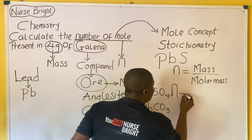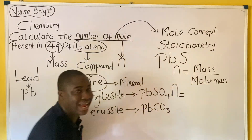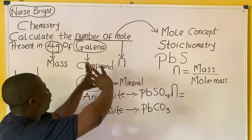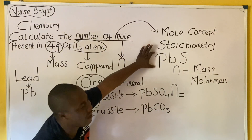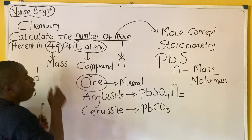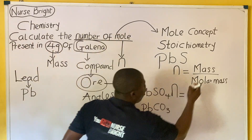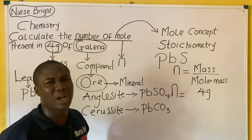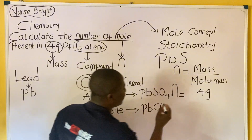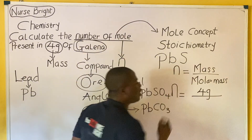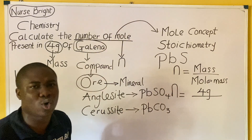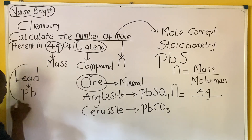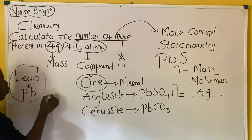In this question, we're looking for the number of moles, which is N. We are given the mass of the compound galena, which is 4 grams. So for mass, I'm going to write 4 grams. Then we divide by the molar mass of PbS, which is galena. We have to calculate that together.